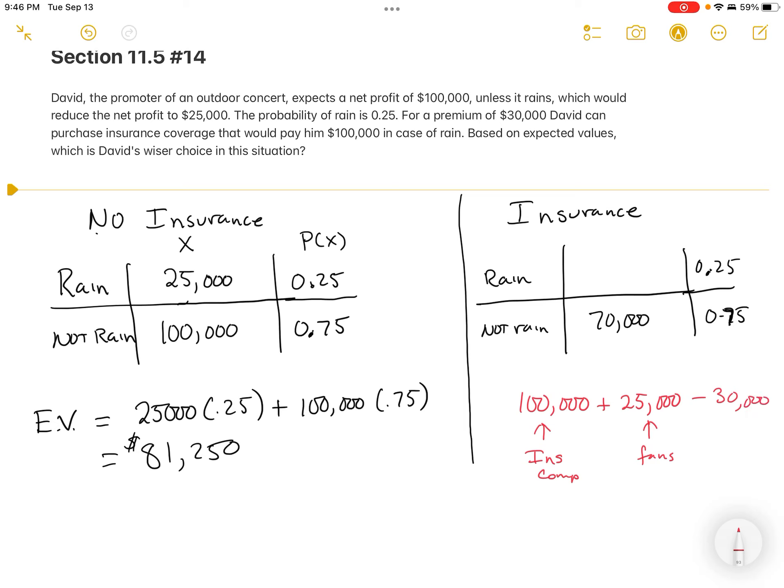And he's also going to get $25,000 just from the concertgoers. This is the insurance company paying him. These are the fans at the concert, but he also spent $30,000 in order to get that. And so when I run all those numbers together, $100,000 plus $25,000 minus $30,000, that puts us at $95,000. So that's the profit that he would get if he bought insurance. He's going to clear $95,000. So it does much better if it rains.